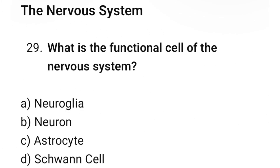Question number 29: What is the functional cell of the nervous system? The correct option is B. Neuron.